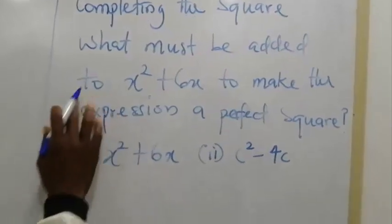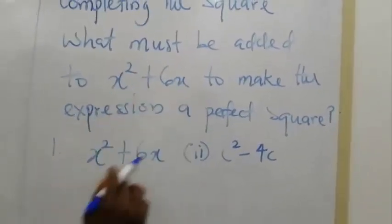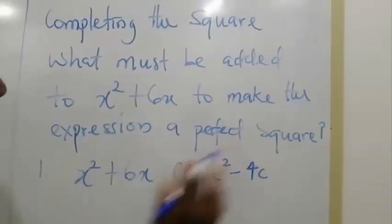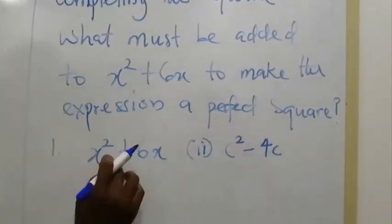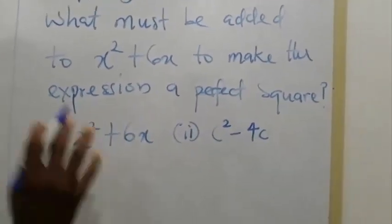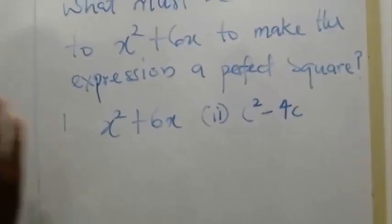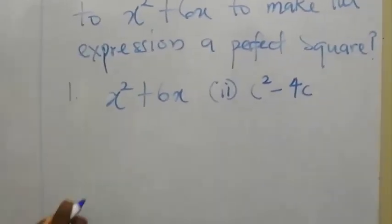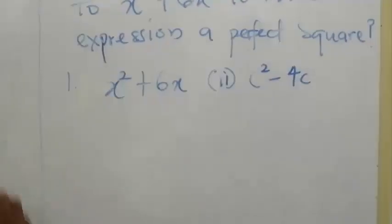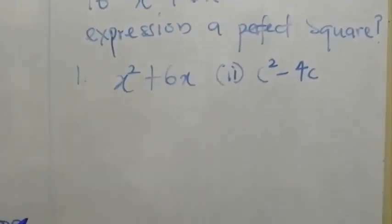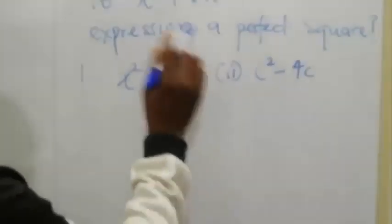What must be added to x² plus 6x to make the expression a perfect square? So there are steps to follow, and one of the steps is that we are going to look for half of the coefficient of x.